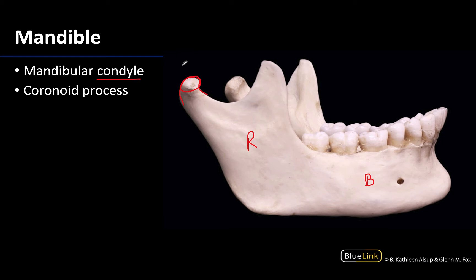You can see that this is nice and smooth because you would have articular cartilage covering the surface during life. This is going to be the M in TMJ — this is the mandibular part of the TMJ joint.